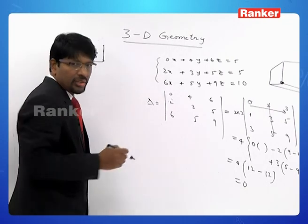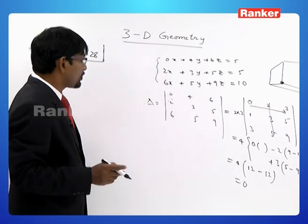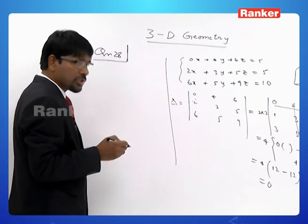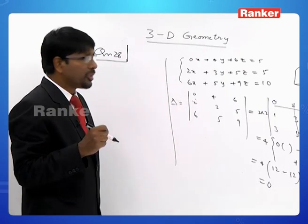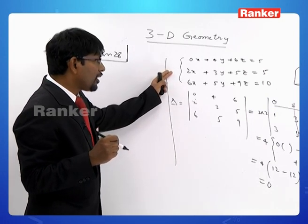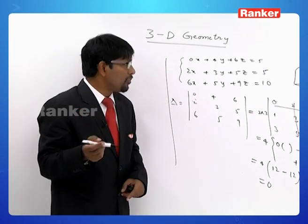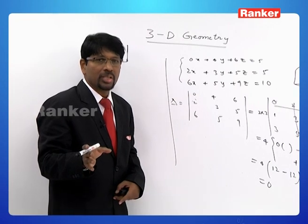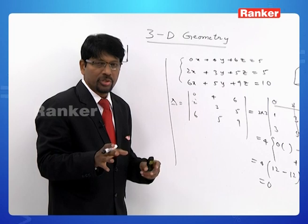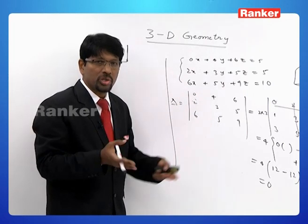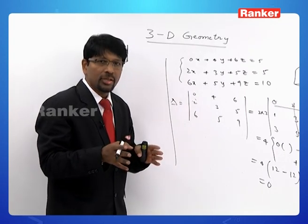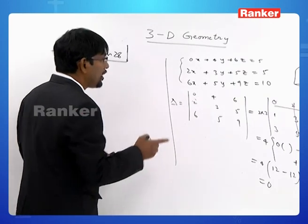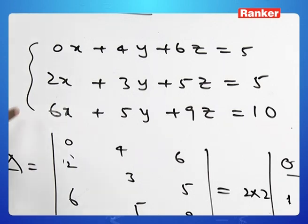Since delta = 0, the answer must be option 2, 3, or 4. They will have a line in common when they have infinitely many solutions. To determine this, we find the rank of the coefficient matrix and the rank of the augmented matrix. If both ranks are equal and less than the number of unknowns, the system has infinitely many solutions and the planes meet in a line.